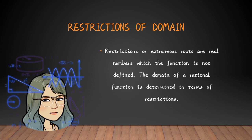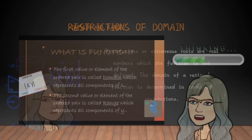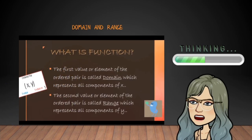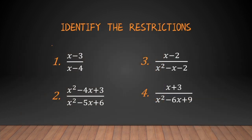The restrictions of domain we are talking about are the values of x — what are the values of x wherein the rational function will be undefined? For the second value or element of the ordered pair, this is what we call the range, which represents all the components of y. Now, how do we identify the restrictions of domain? Let's use these four examples to identify the restrictions.